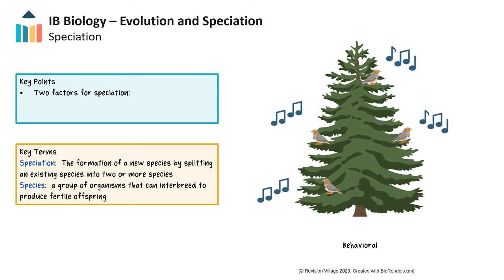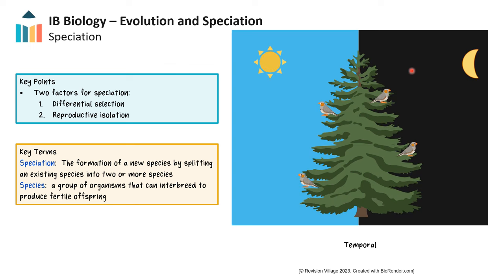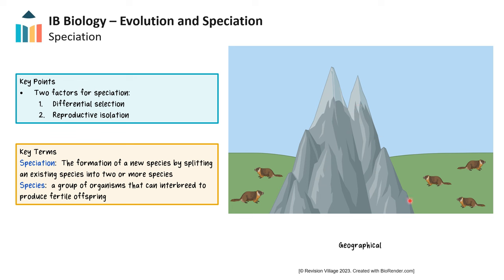So how does speciation occur? There needs to be two factors at play: differential selection and reproductive isolation. Reproductive isolation occurs when populations stop breeding with each other. There could be behavioral reasons, such as the development of different mating calls, or temporal, being active at different times of the day. Often, the isolating event is geographical, where a physical barrier like a river or mountain formation separates members of the population. Once the population is separated, there also needs to be differential selection — each population must experience different selection pressures, like different predators or food sources, that select for different adaptations.